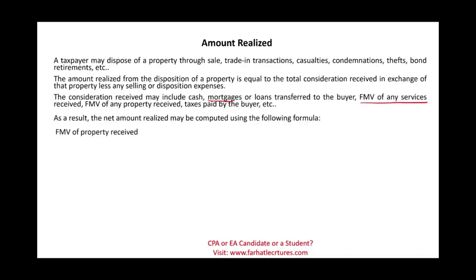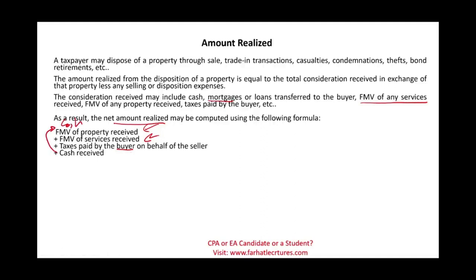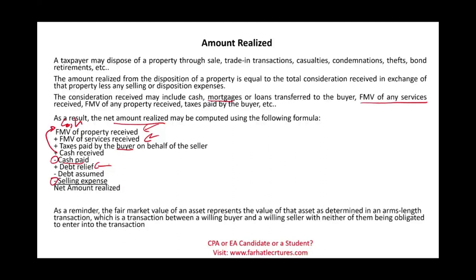The complete formula for amount realized includes: fair value of property received, plus fair value of any services received, plus any taxes paid by the buyer on your behalf, plus cash received. Any debt relief — where you are no longer responsible for the debt — increases amount realized. If you assume debt as a result of the transaction, you deduct it from the proceeds. Minus any selling expenses gives you the net amount realized.